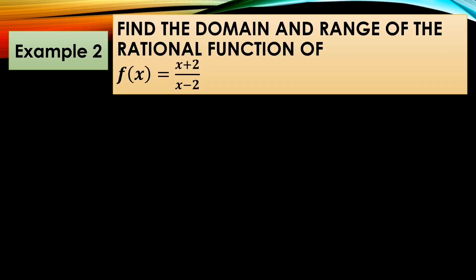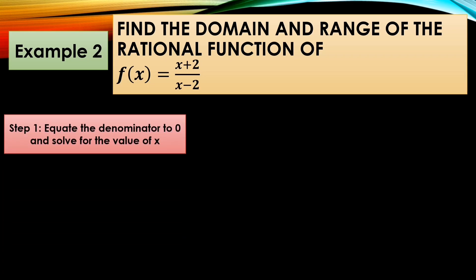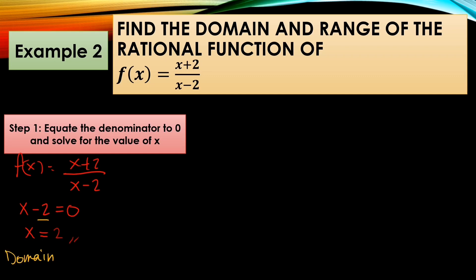Example number 2: find the domain and range of the rational function f(x) = (x + 2) over (x − 2). Equate the denominator to zero: x − 2 = 0, so x = 2. That will be the value of x. So the domain is all real numbers except x is not equal to 2.